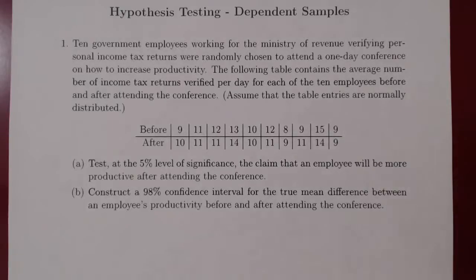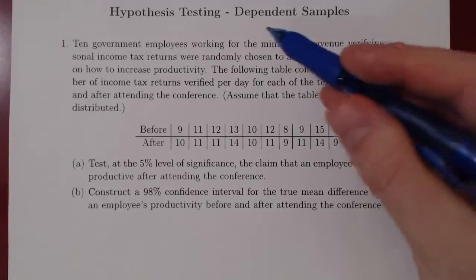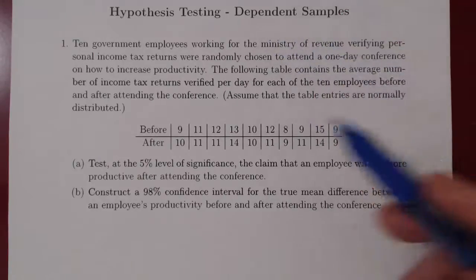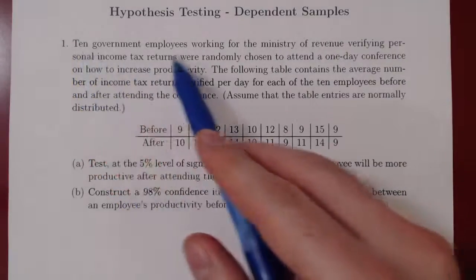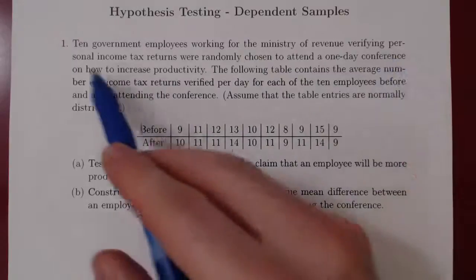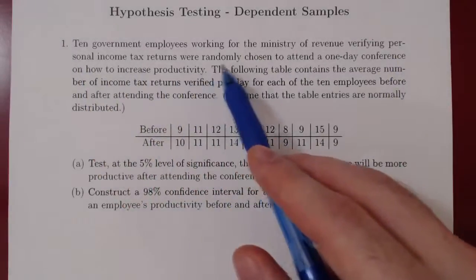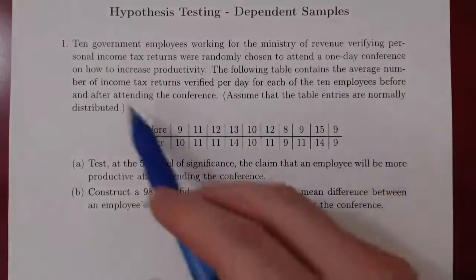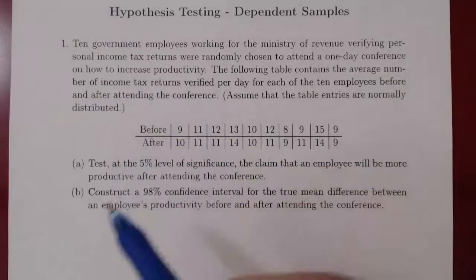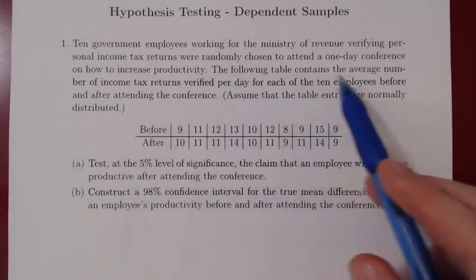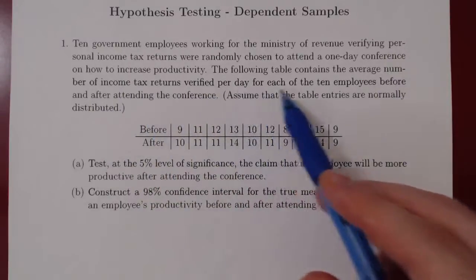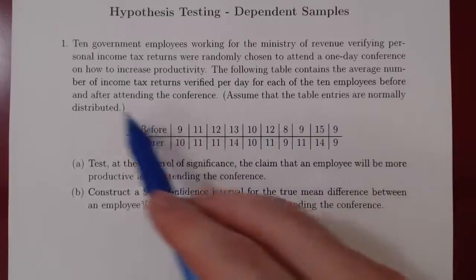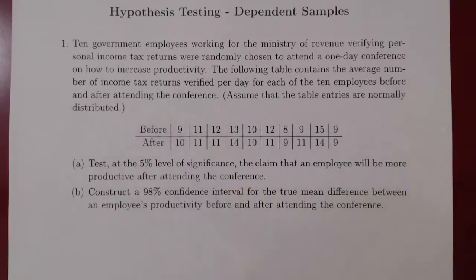In this video, we will consider an example of a test of hypothesis in the case of two dependent samples. Ten government employees working for the Ministry of Revenue, verifying personal income tax returns, were randomly chosen to attend a one-day conference on how to increase productivity. The following table contains the average number of income tax returns verified per day for each of the 10 employees before and after attending the conference.